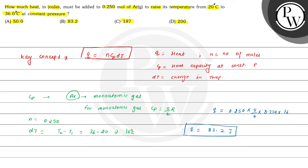This 83.2 joules is given in option B. Hence, option B is the correct choice for this question. Hope you understood it well. All the best and thank you.